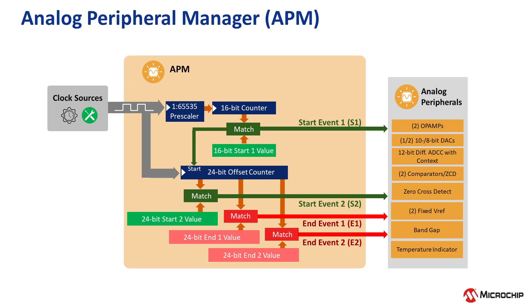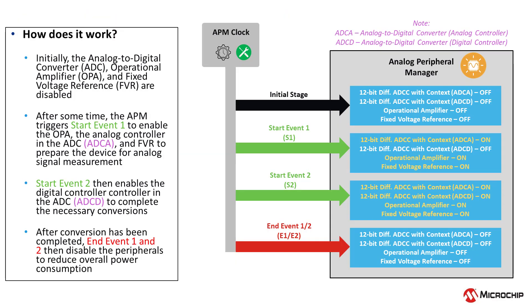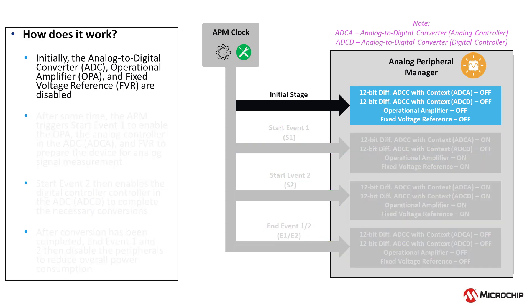The APM gives you two different start times and two different end times, enabling the user to select which analog modules will start and end in each case, providing flexibility to your application. Using the APM, you can periodically enable the ADC module to save power between samples. The ADC has separate analog and digital controls for additional power savings. Here is a simple example that demonstrates how the APM can be used when sampling signals using an op-amp, ADC, and an FVR. Initially, the op-amp, ADC, and FVR are disabled to minimize power consumption.